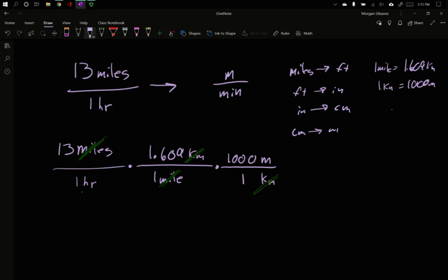I need to be in minutes. So what happens if we have a unit on bottom? I want minutes on bottom in the end. I need to have minutes on bottom and I need to get rid of that hours on bottom, so I'll have an hour on top. When I multiply across and divide down, I'll have an hour on top and an hour on bottom. They will cancel out. In one hour, there are 60 minutes. And so hours will cancel.